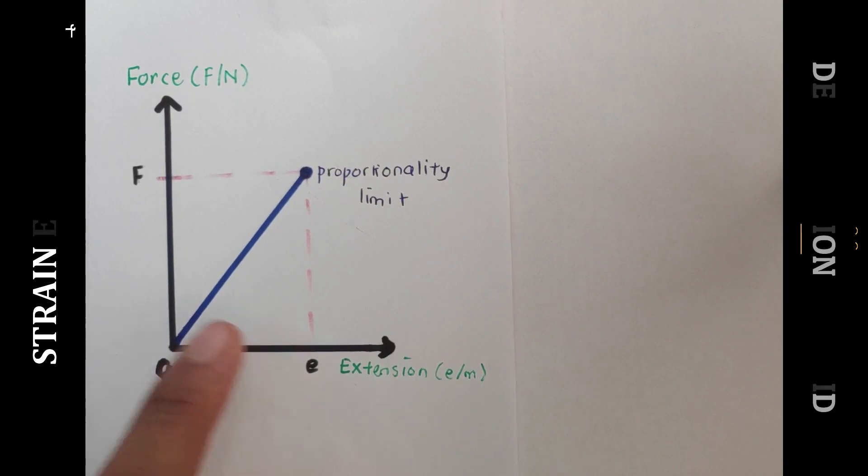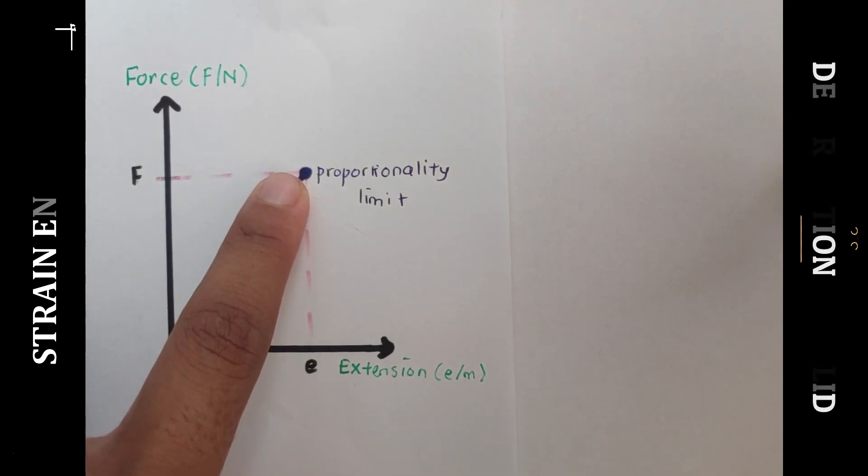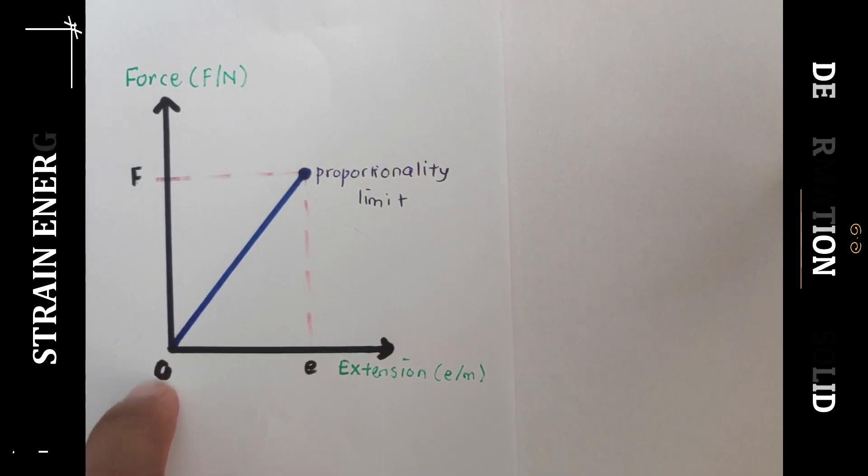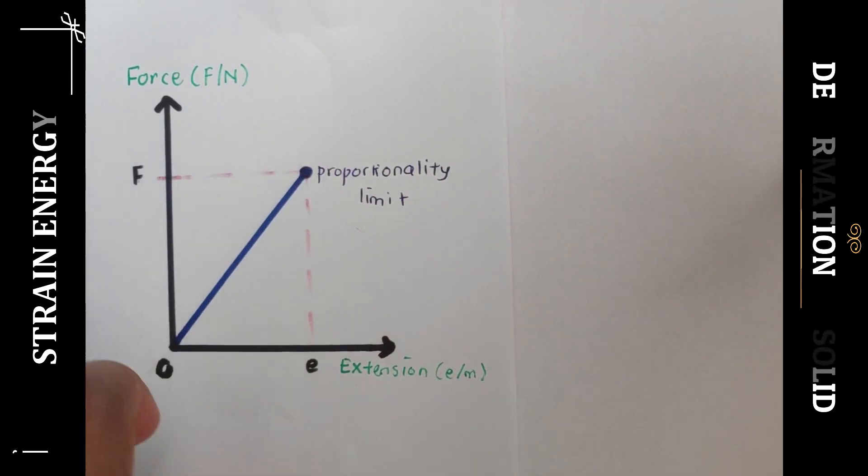The graph of this wire until the proportionality limit, as shown in the previous videos, goes from O to point A. From the graph, we can analyze the work done.